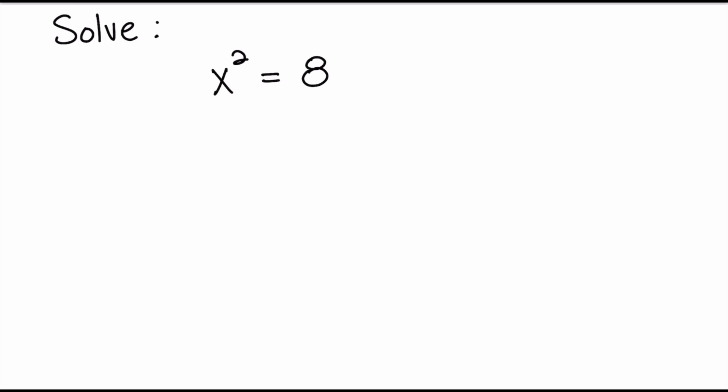Take a look at the first example on your screen. We want to solve this quadratic equation by using the square root property. It says x squared equals 8. In this case the x squared, which is the quadratic term, is already isolated, so all I have to do is take the square root of both sides. But remember, when you take the square root of 8 it's going to be plus or minus. On the left hand side the square root and the square cancel, so x is going to equal plus or minus the square root of 8.